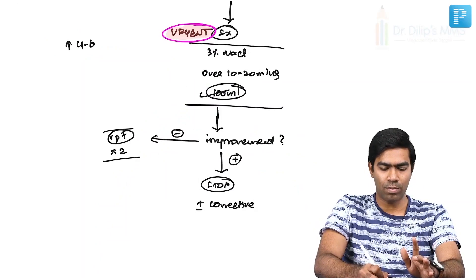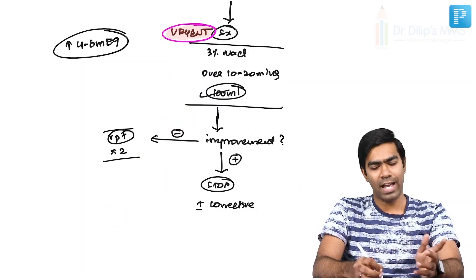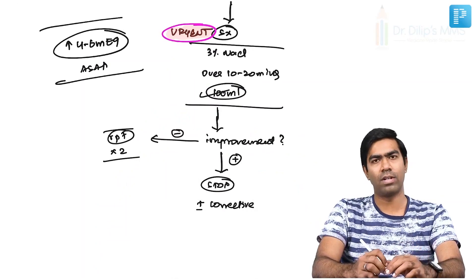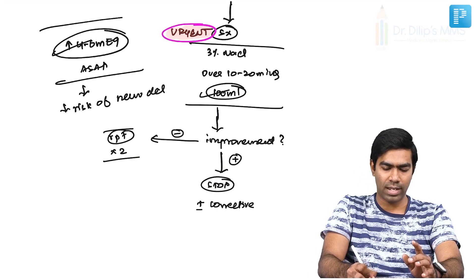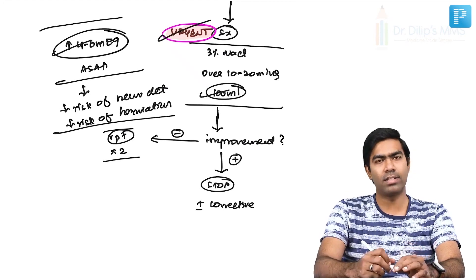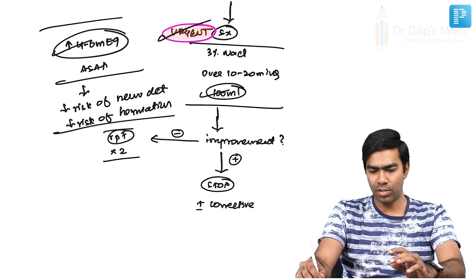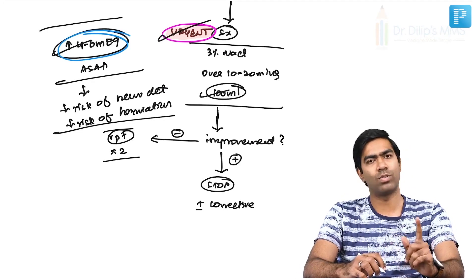Why do we give this urgent treatment in the first place? By using hypertonic saline urgently, you are trying to improve the patient's symptoms as soon as possible and reduce the risk of brain herniation. It has been proven by multiple trials that raising serum sodium by 4 to 6 mEq/L as soon as possible — even within half an hour or one hour — can rapidly reduce the risk of neurological deterioration and brain herniation.